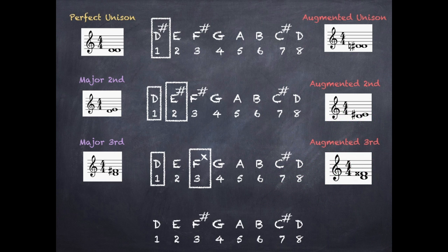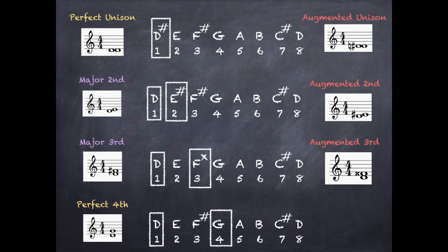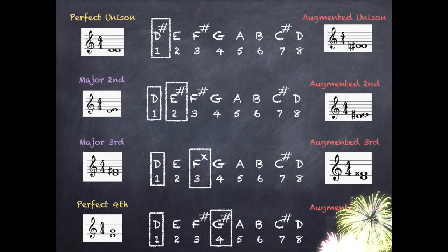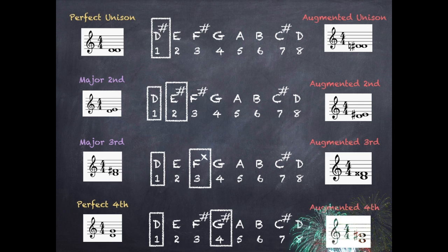For an augmented fourth, first work out the perfect fourth. We go from the first note of the D major scale to the fourth note, D to G. To augment the fourth, sharpen the top note of the perfect fourth, which becomes G sharp. So we place D and G sharp on the stave.